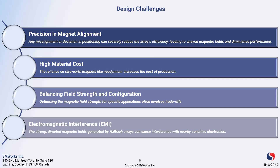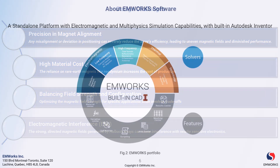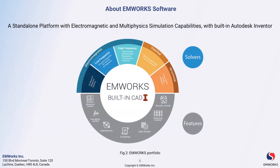The strong directed magnetic fields generated by halbach arrays can interfere with nearby sensitive electronics. This interference can pose challenges in applications where precise electronic control is necessary, necessitating careful design considerations to mitigate these effects. Moving ahead, now let's talk about EMWorks software.